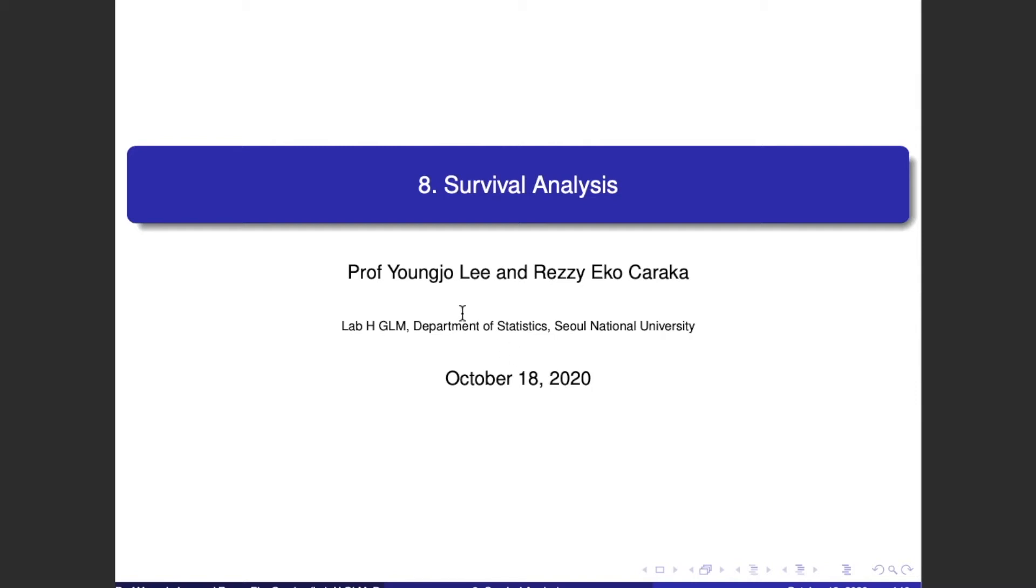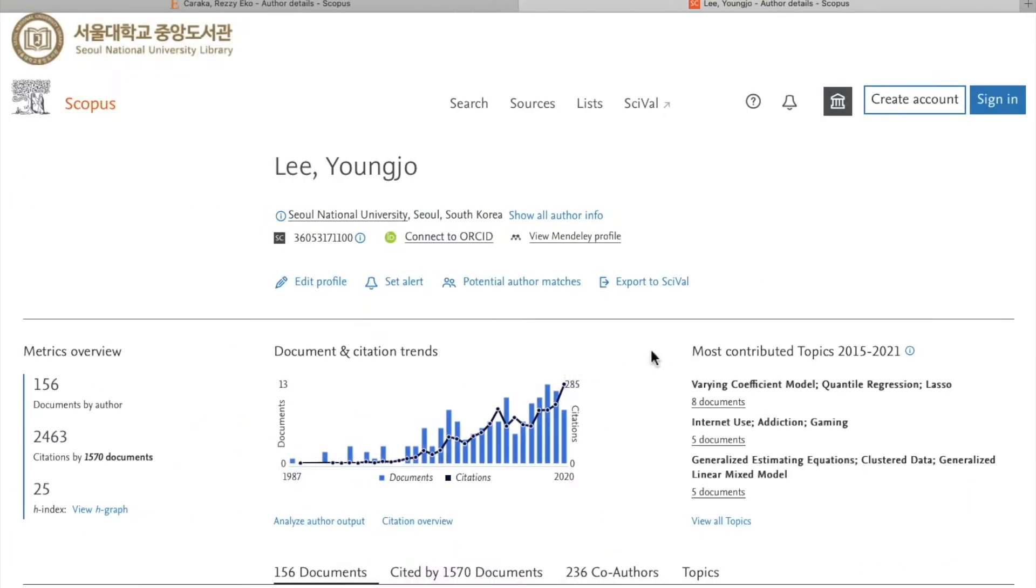Chapter 8, survival analysis. If you want to read out-of-the-box research papers, you can go through the Scopus profile of Professor Yongjoli or me.